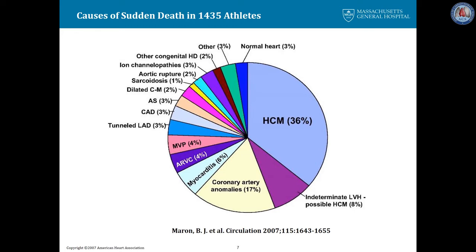Barron's study in Circulation of 2007 of sudden death in 1,400 athletes also showed that coronary artery anomalies made up about 20% of the cases of sudden death in athletes.